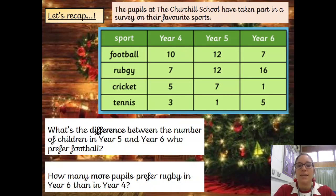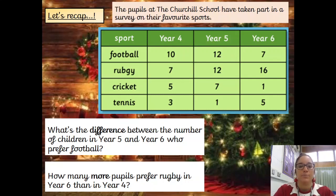Remember, the difference means we're subtracting. We've got 12 children in Year Five who prefer football and 7 children in Year Six. So the difference is 5 — five more children in Year Five prefer football over those in Year Six.